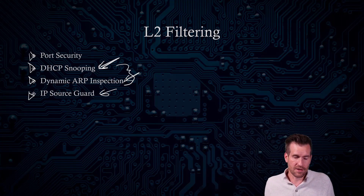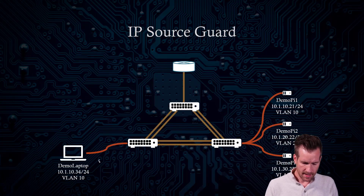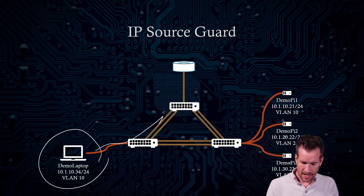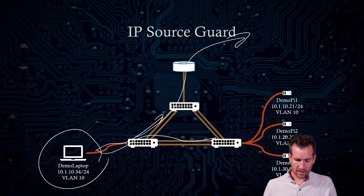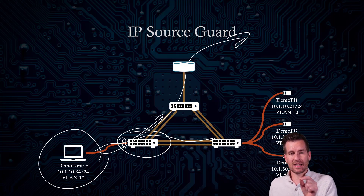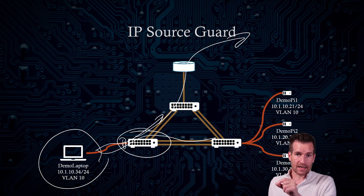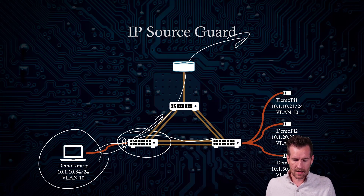So that is IP Source Guard. All the frames that are coming from this demo laptop out to the network, maybe out to the outside world — this switch is going to be analyzing those frames and taking a look at the IP address, matching it up against the binding database to see if it should be coming from that port or not. Obviously it's looking at the source IP address, and we can also look at the MAC address with that. So that is IP Source Guard.